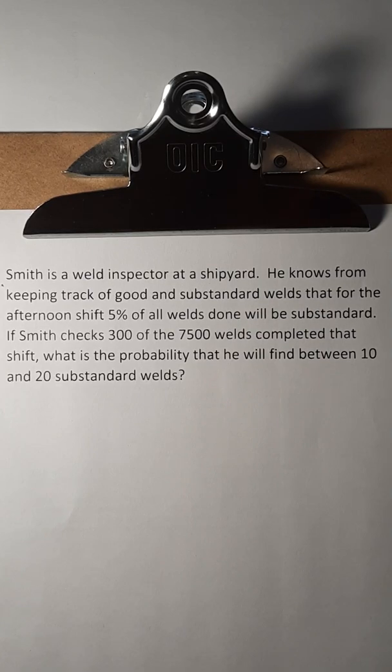Smith is a weld inspector at a shipyard. He knows from keeping track of good and substandard welds that for the afternoon shift, 5% of all welds done will be substandard. If Smith checks 300 of the 7500 welds completed that shift, what is the probability that he will find between 10 and 20 substandard welds?